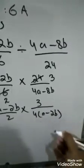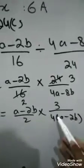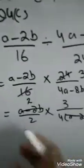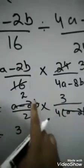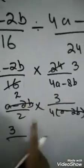After we have factorized this, a minus 2b would be divided by this a minus 2b. 3 times 1 is 3. 2 times 4 is 8.